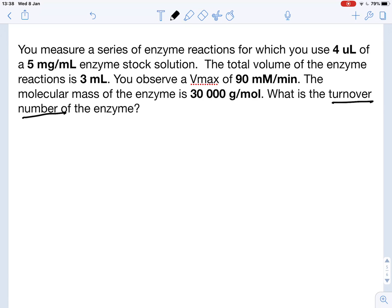We've got our enzyme reaction here, we've got all the information. So we use 4 microliters of our stock solution of the enzyme. We have a total volume of 3 milliliters in which we do the reaction, and we finally find a Vmax of 90 millimolar per minute. And we also know the molecular mass of the enzyme, which is 30,000 grams per mole.